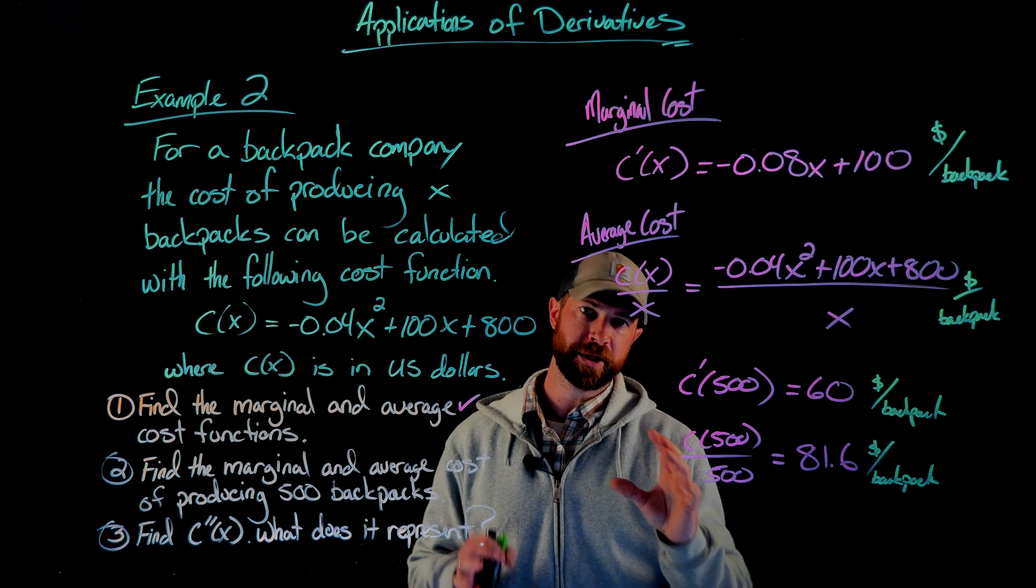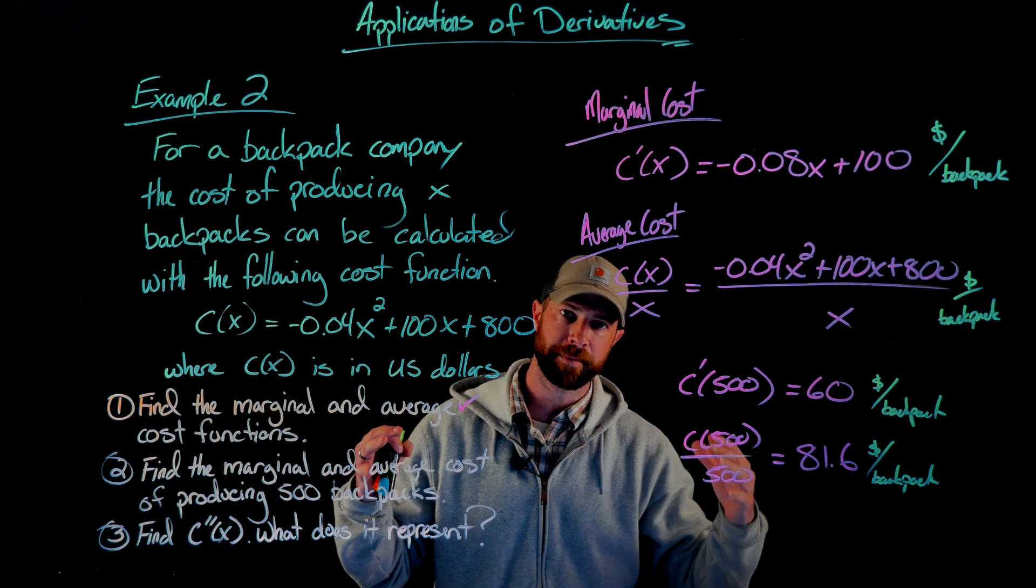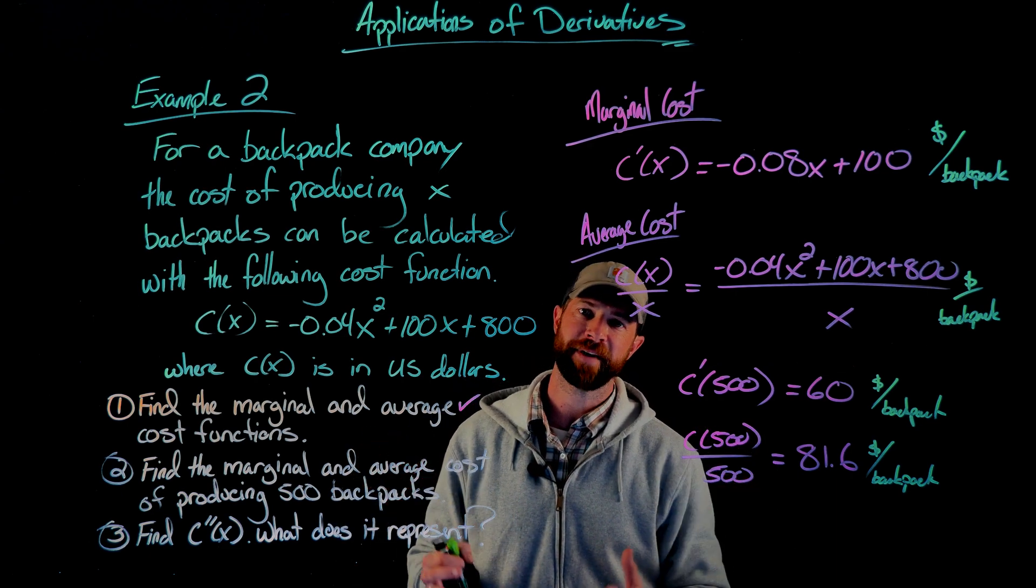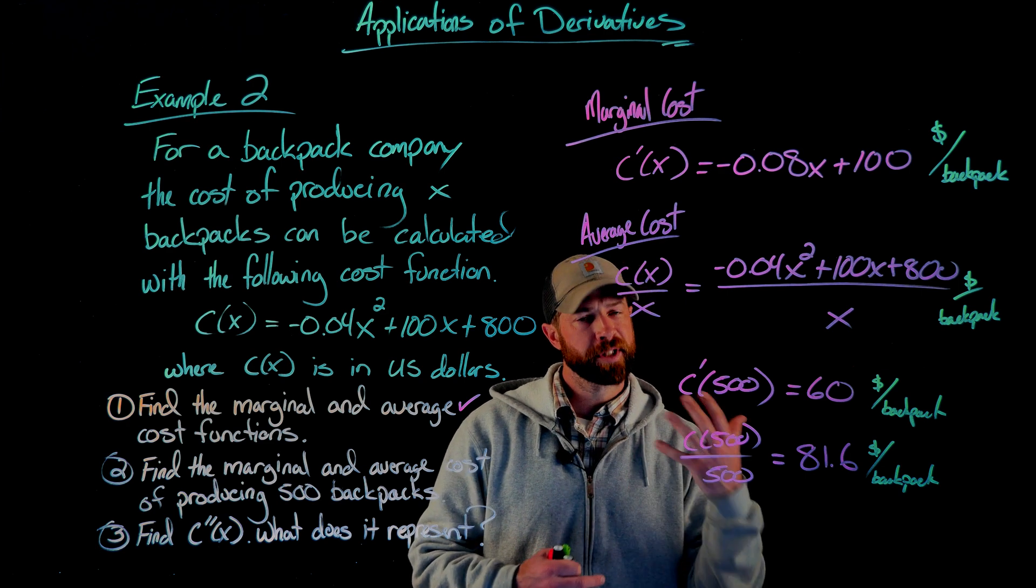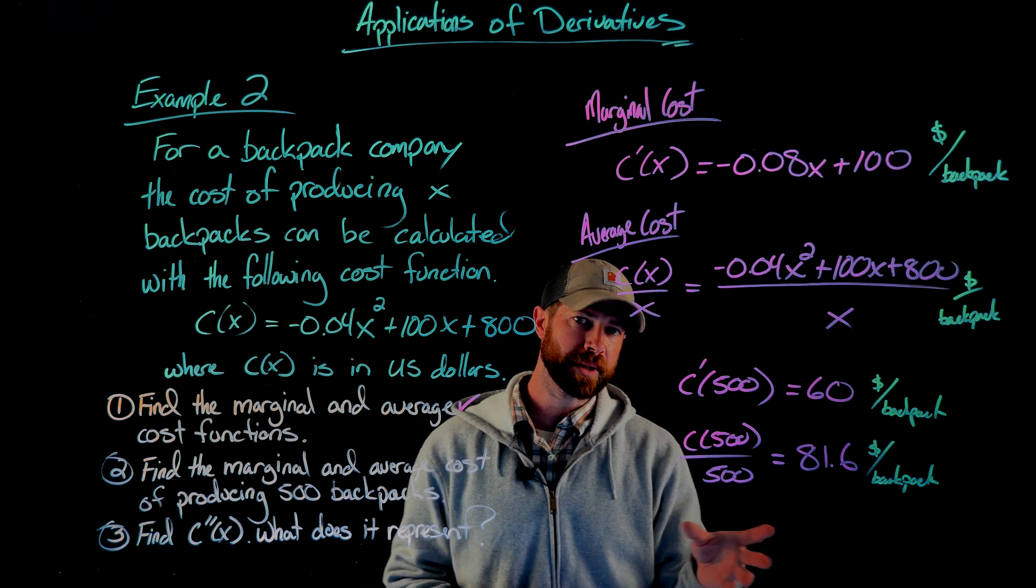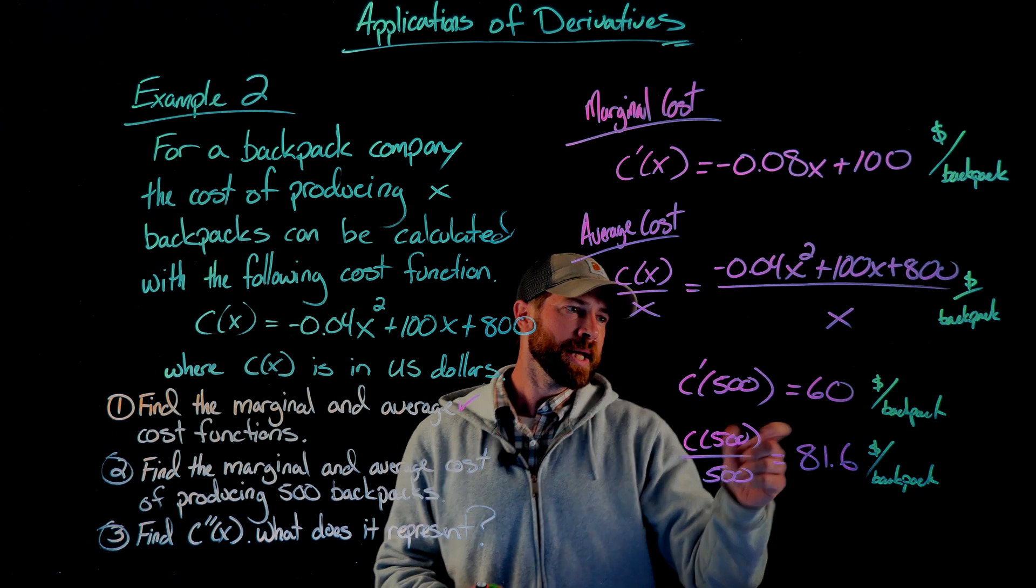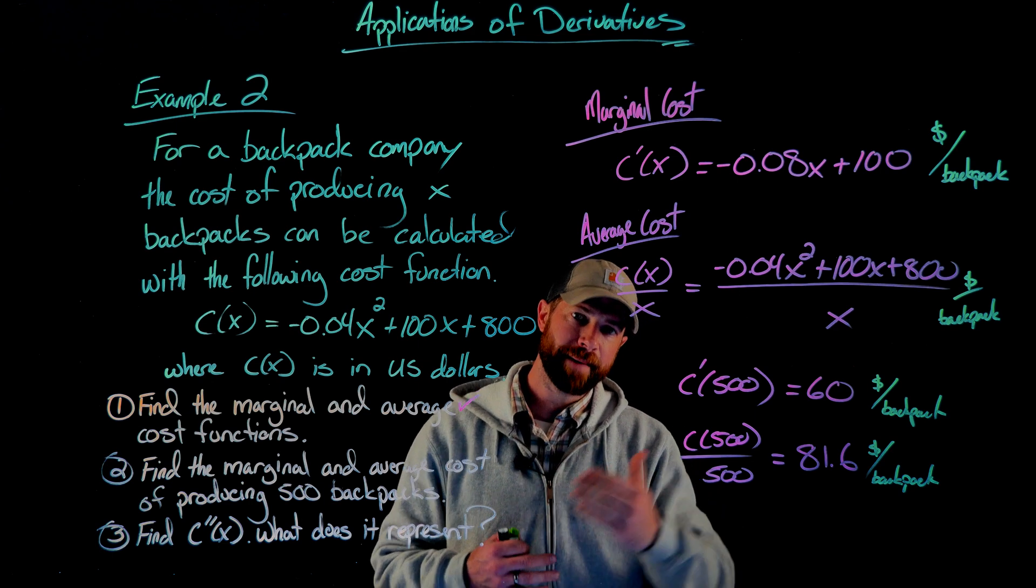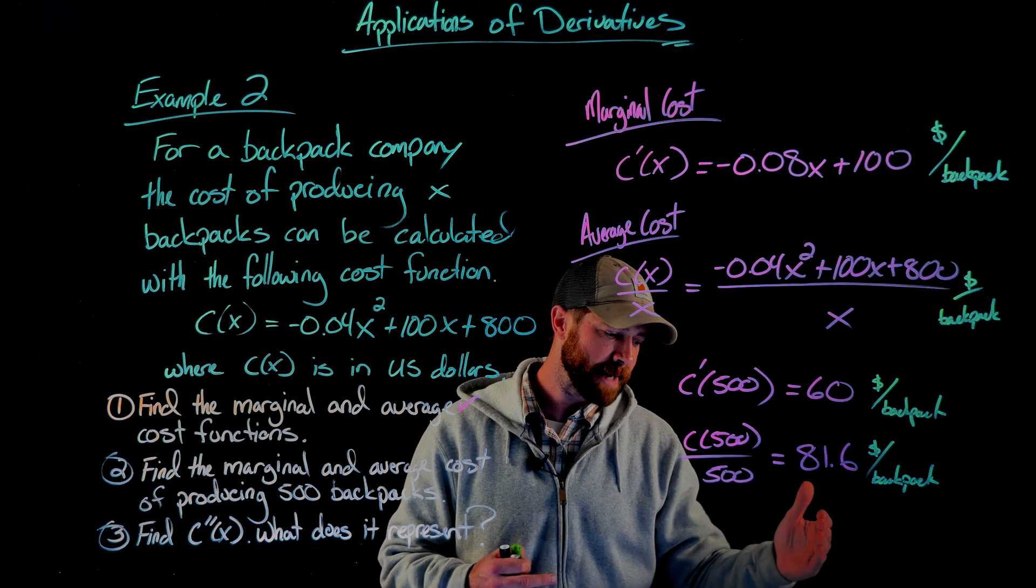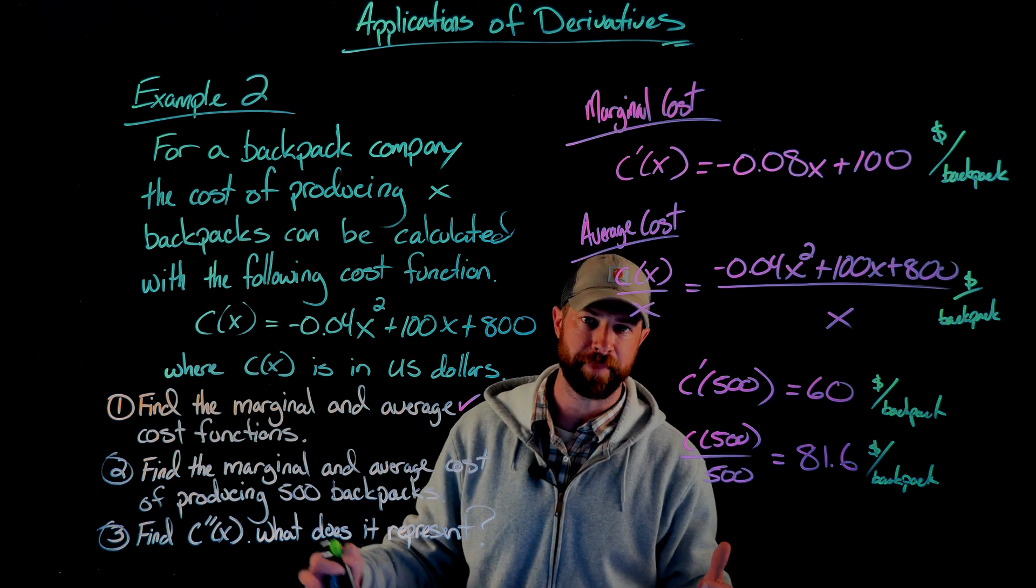The average cost function is doing a little bit different. What this is saying is this is taking the entire cost for producing 500 backpacks and dividing by 500. You may be thinking, why are those numbers not the same? Generally speaking, this is the idea of economies of scale. What this means is that cost for every backpack is going down as they make more backpacks. The 500th backpack does not cost this company as much as the 100th backpack or the 10th backpack.